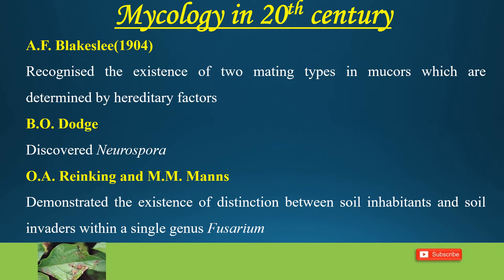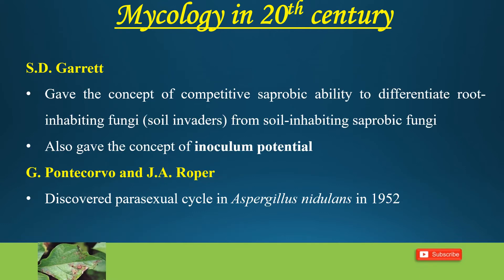S.D. Garrett gave the concept of competitive saprobic ability to differentiate root-inhabiting fungi, that is soil invaders, from soil-inhabiting saprobic fungi. He also gave the concept of inoculum potential.